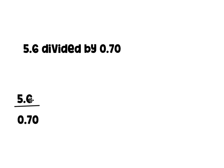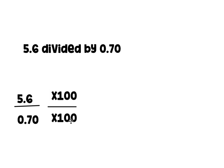Let's look at another example. Here we have 5 and 6 tenths divided by 70 hundredths. First I'll write the division problem as a fraction: 5 and 6 tenths divided by 70 hundredths. This is a slightly different problem — in the numerator the decimal is in the tenths place, but in the denominator the decimal is in the hundredths place. In these cases you have to look at which place has more decimal places and multiply by that. Since the hundredths place has more decimal places, we're going to multiply both the top and the bottom by 100.